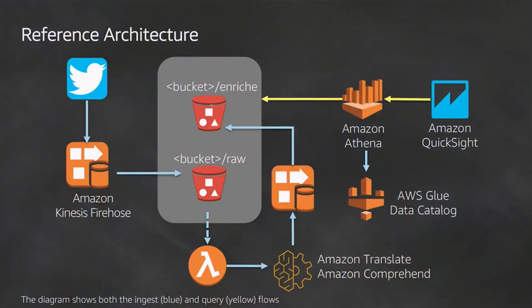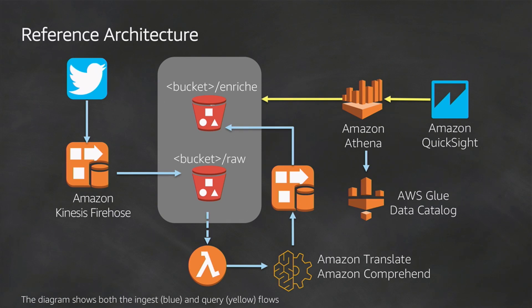In this architecture we have an EC2 instance listening for the Twitter stream — it doesn't need to be EC2, it could be a Fargate container. But given this is a long-lived connection and Lambda has a five-minute timeout, EC2 or Fargate is better. We're posting those tweets directly into the Kinesis Firehose.